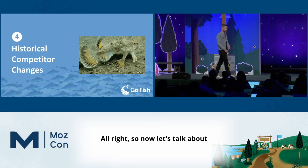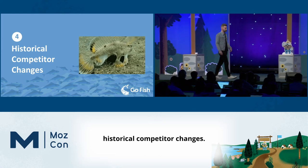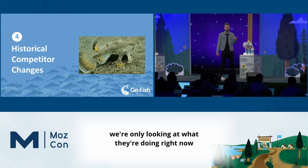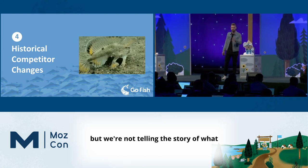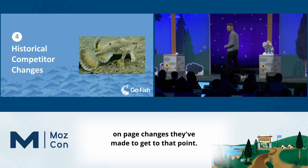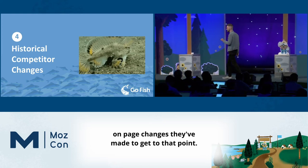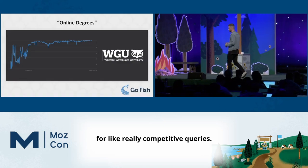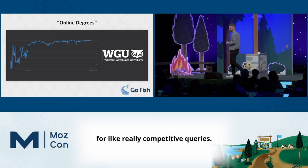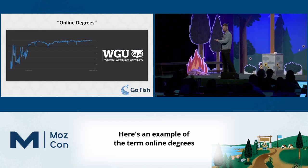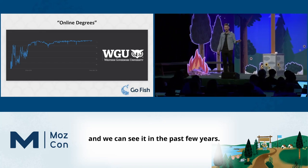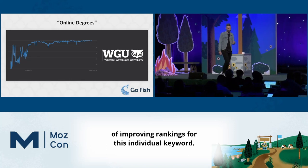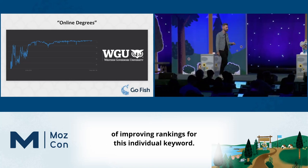Now let's talk about historical competitor changes. When we look at competitors, we're only looking at what they're doing right now, but we're not telling the story of what on-page changes they've made to get to that point. I like to do this type of analysis for really competitive queries. Here's an example: for the term 'online degrees,' we can see that WGU has done a phenomenal job improving rankings for this keyword over the past few years.